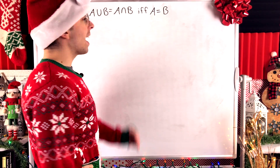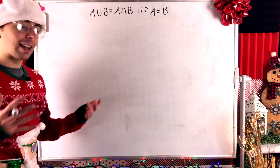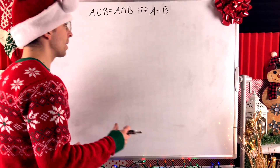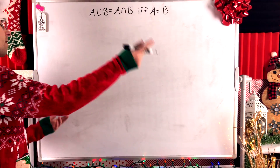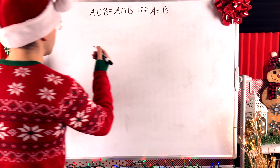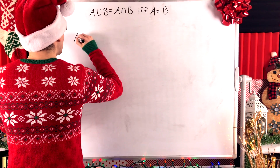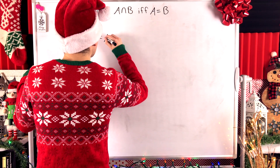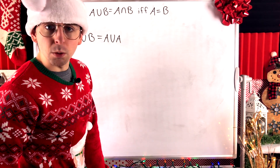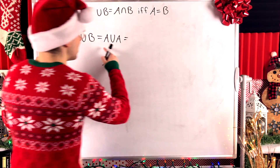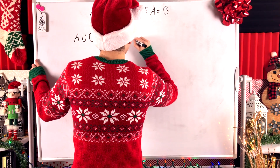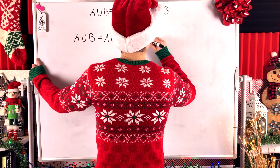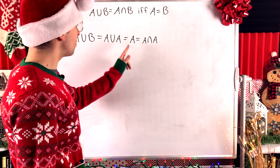First, we want to show that if A is equal to B, then their union must equal their intersection. You could tackle this direction of the proof with various levels of detail. But let me show you one very basic string of equalities. If we assume that A equals B, then since A equals B, we could replace B with A. So A union B is certainly equal to A union A. And then by definition of set union, A union A is certainly equal to A. Then by definition of set intersection, A is definitely equal to A intersect A.